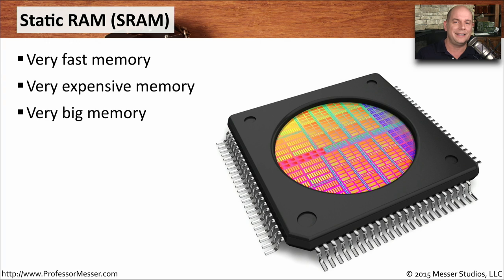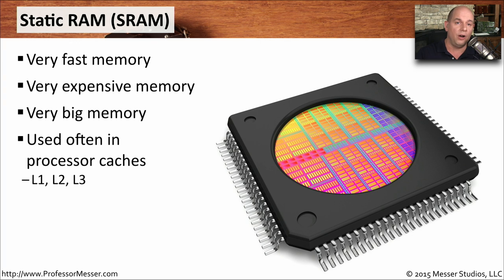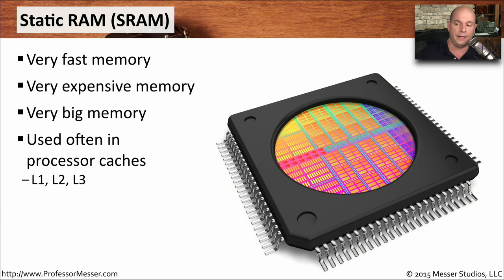Because static RAM is so fast, we often will see it used on the CPU itself or just off the CPU as processor caches. You may see this referred to as level 1, level 2, or level 3 caches, abbreviated as L1, L2, and L3.